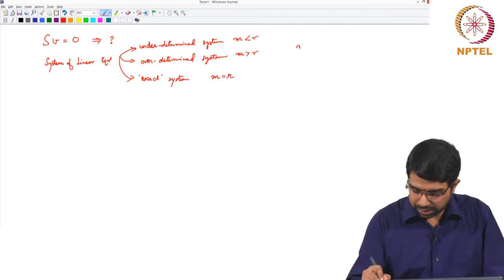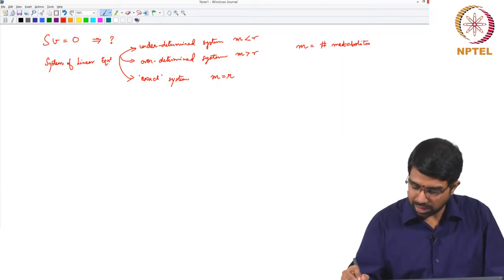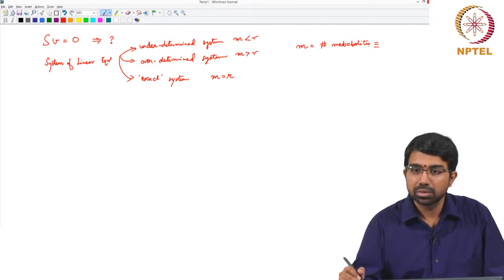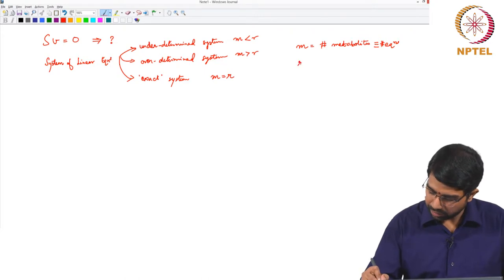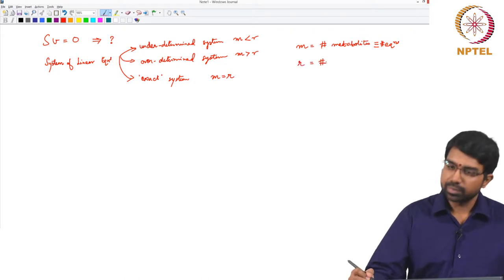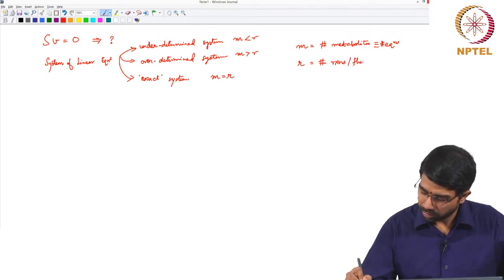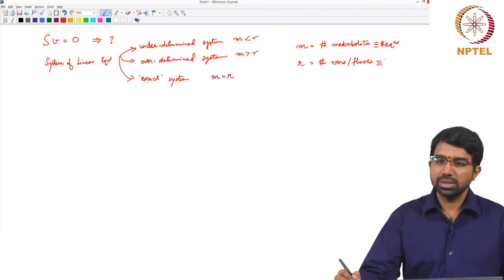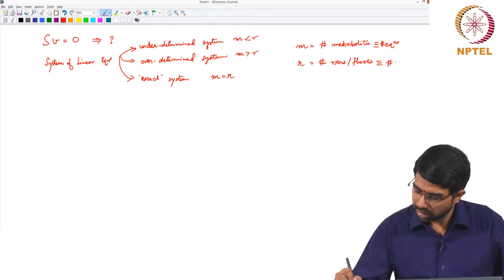What is M? Which is the same as the number of equations. Every metabolite has an equation. R is the number of reactions or fluxes, which is the same as variables or unknowns.